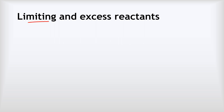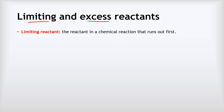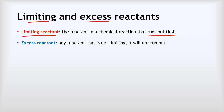The reactants in a chemical reaction can be described as limiting or excess depending on the relative amounts of each reactant. The limiting reactant is the chemical reactant that will run out first, and any reactant that will not run out is described as excess, or being present in excess.